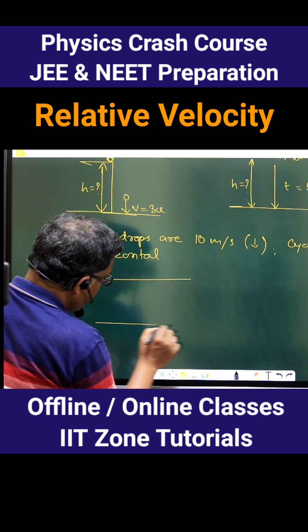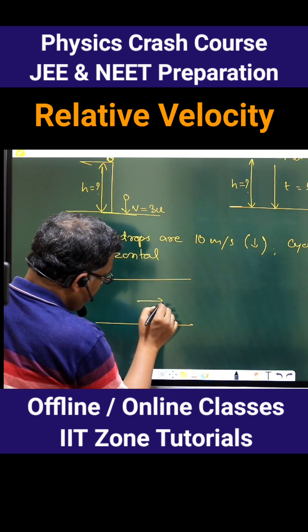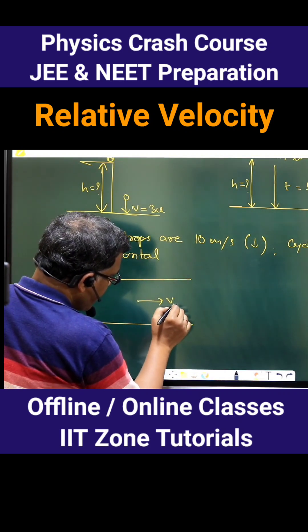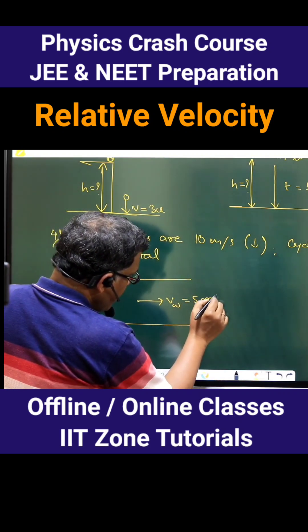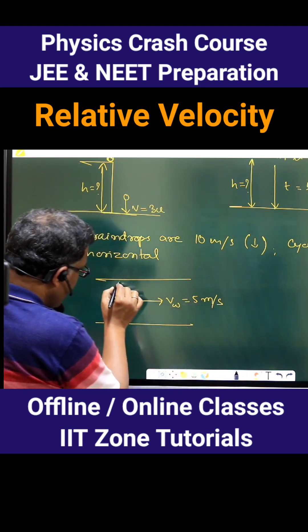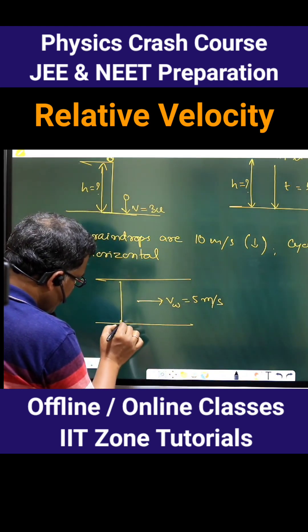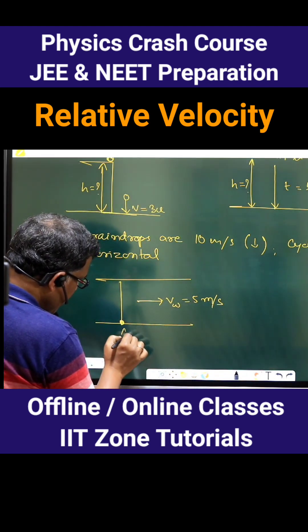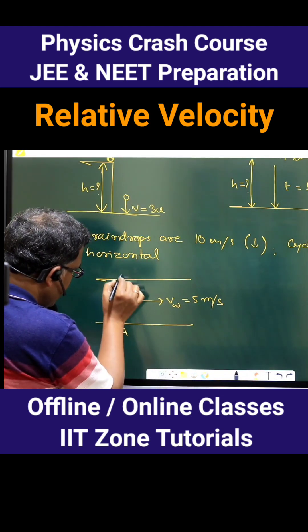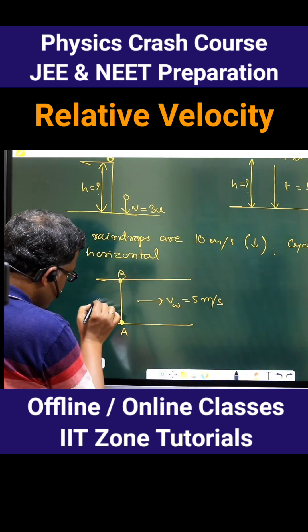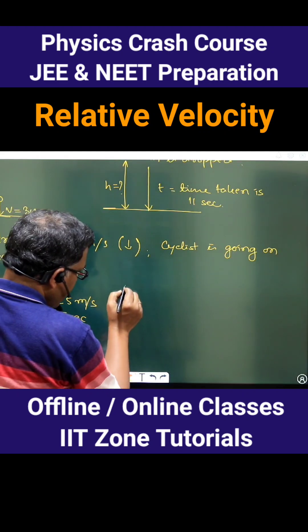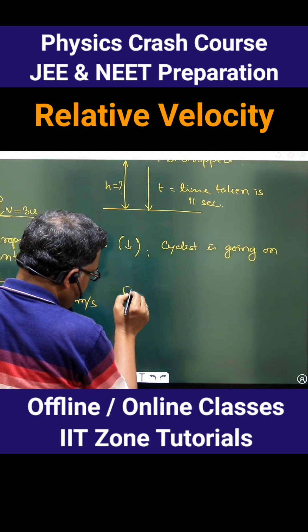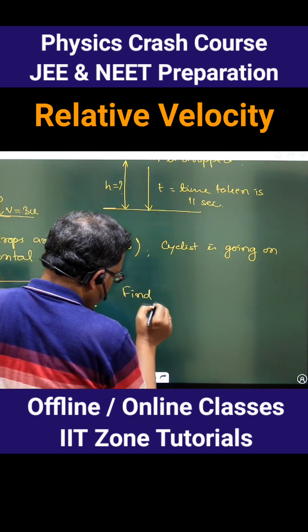If this is the river width, the velocity of river — meaning water — is given as 5 meters per second, and this is given as 60 meters, A to B. Find the velocity of man in still water.